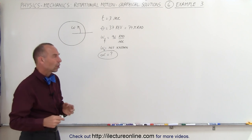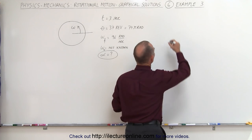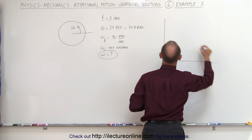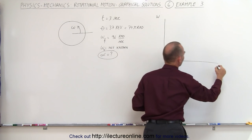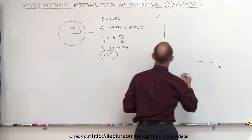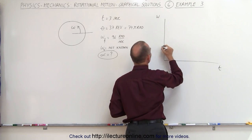Again we'd like to start with an omega versus t graph, an angular velocity versus time graph. So here's omega, here is time. Well we don't know what initial omega is.